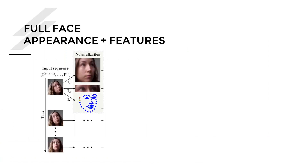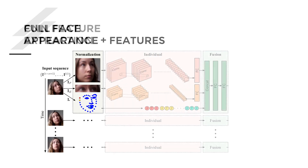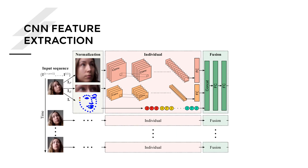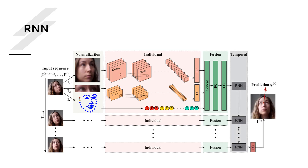To combine these three pieces of information, they run the face and eye regions through a bank of convolutional layers followed by fully connected layers, converting images into feature vectors. They then concatenate all features into one tall vector and use an RNN to combine temporal information and make a prediction. This paper summarizes many of the new thoughts in gaze tracking.